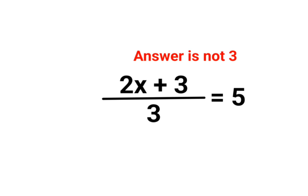So here first we need to shift the denominator on the other side of the equal to. So you get 2x plus 3 equals to 15.